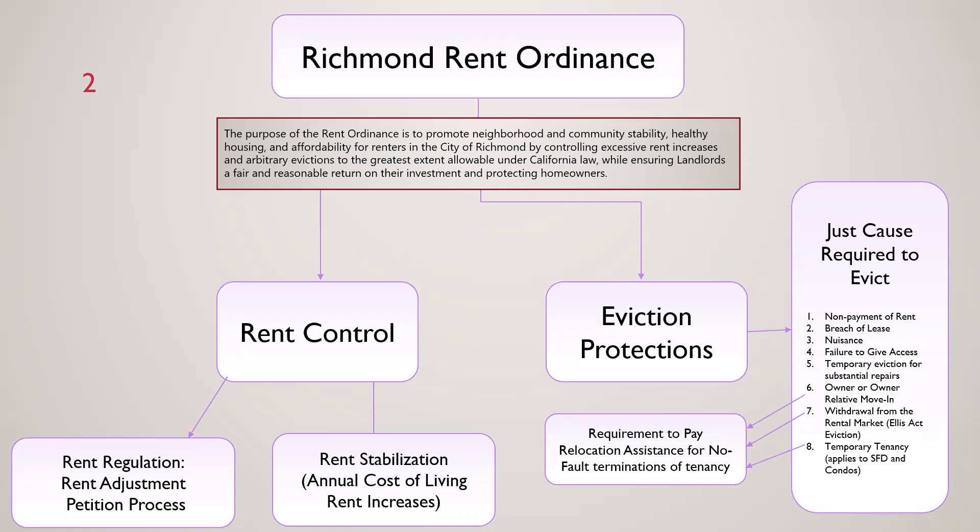The rent ordinance has two main components: rent control and eviction protections. Rents are controlled or regulated in two ways. First is an annual cost of living rent increase, which is tied to 100% of the consumer price index, or the inflationary rate from the Bay Area. This increase, which occurs every September 1st, is also known as the Annual General Adjustment, or AGA.